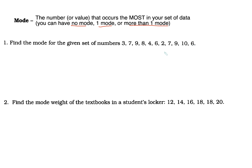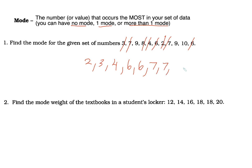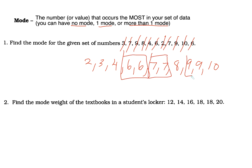Here I have some numbers. I'm going to put them in order. The smallest is 2, then 3, 4, then two 6s, two 7s, one 8, and two 9s, and 10. Mode is the number that appears the most. The 6s appear twice, the 7s appear twice, and the 9s appear twice. So my mode is 6, 7, and 9 — this answer has three modes.